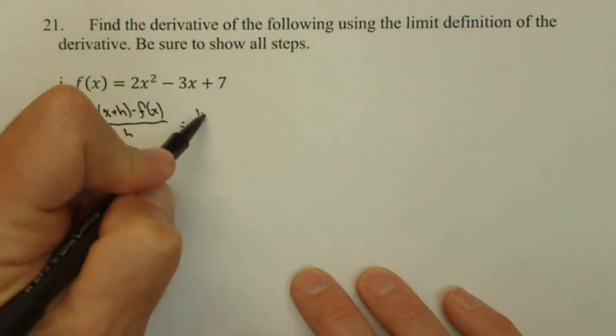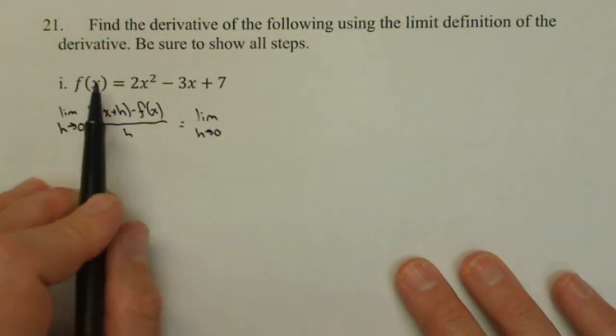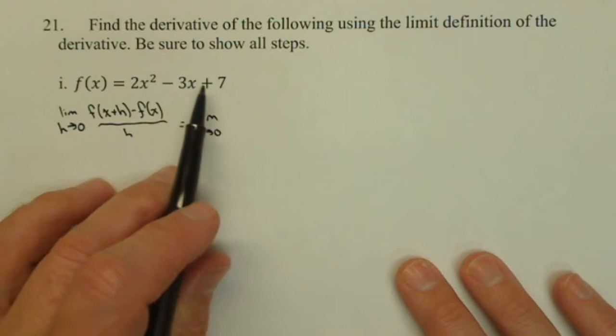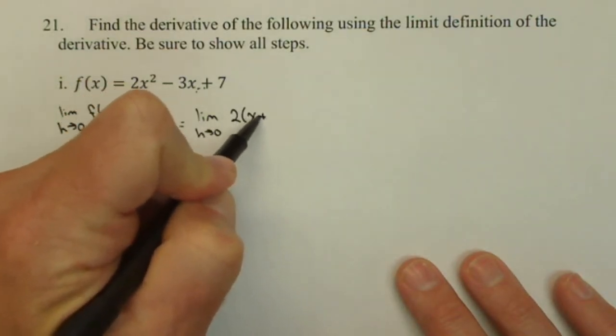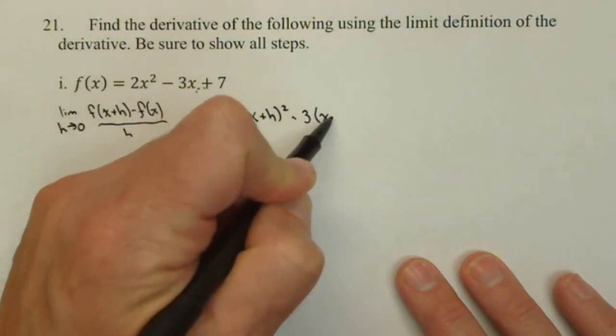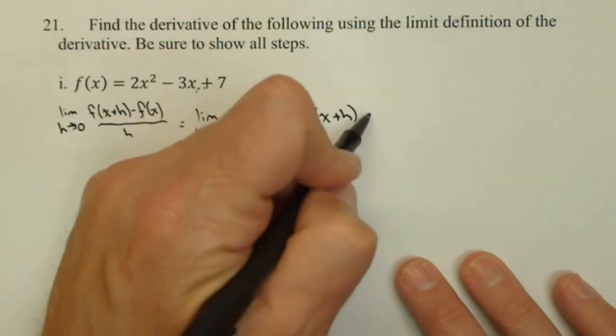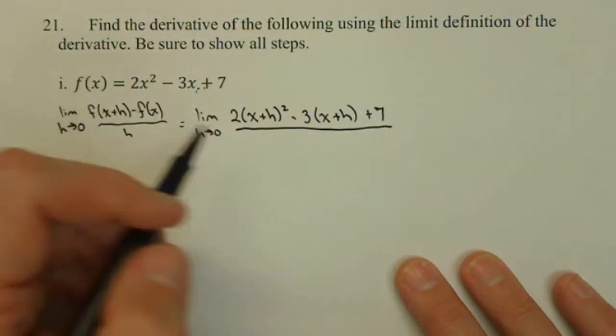First thing is we need to make sure we set this up correctly. f of x plus h is f of x with x plus h put in for our inputs. So, 2 times x plus h, the quantity squared, minus 3 times x plus h plus 7 all over